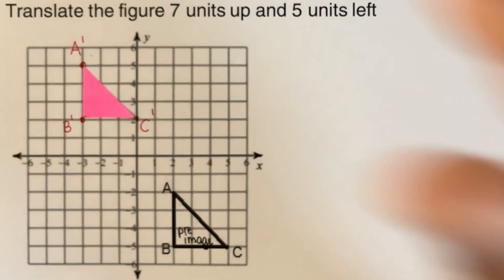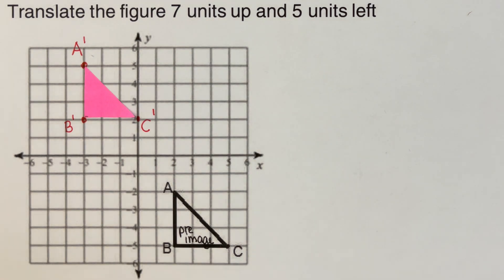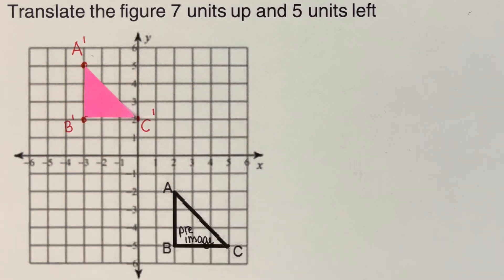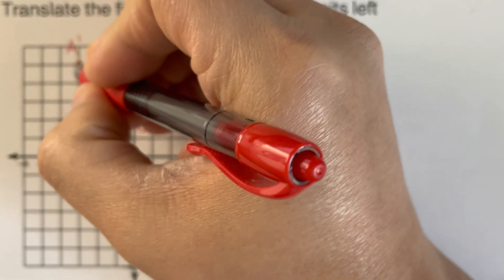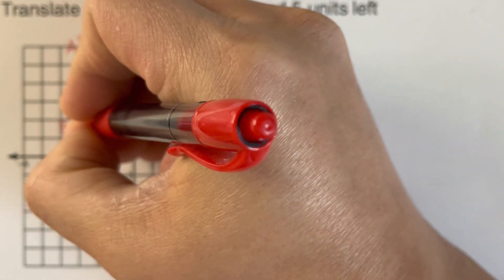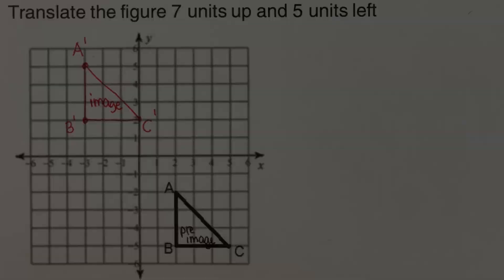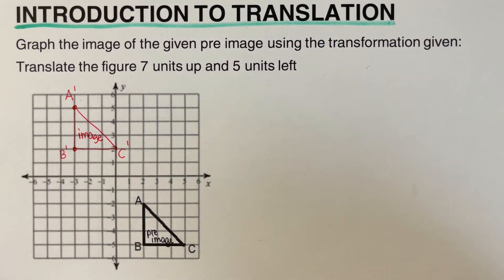So again, as you can see in the picture, we did not rotate the triangle. This purple triangle right here, we did not flip it. What we did was we actually just moved it seven units up and five units left so that we can go ahead and draw the triangle right here. And we can label this as our image.